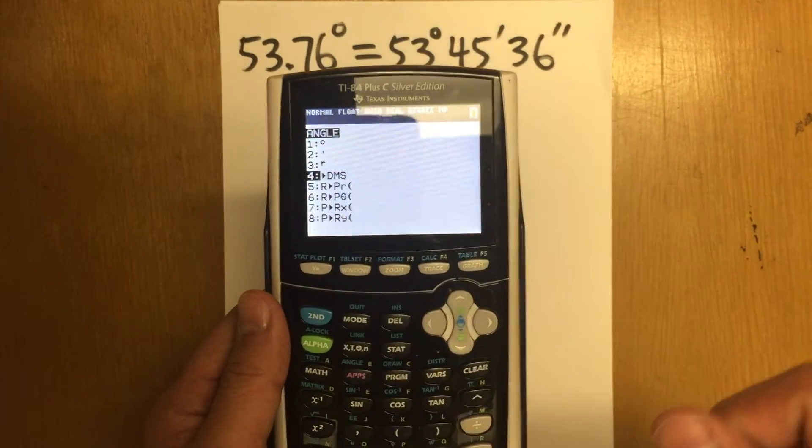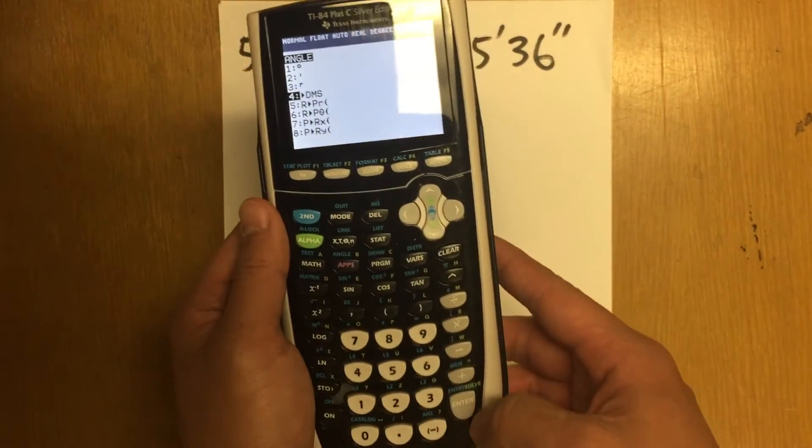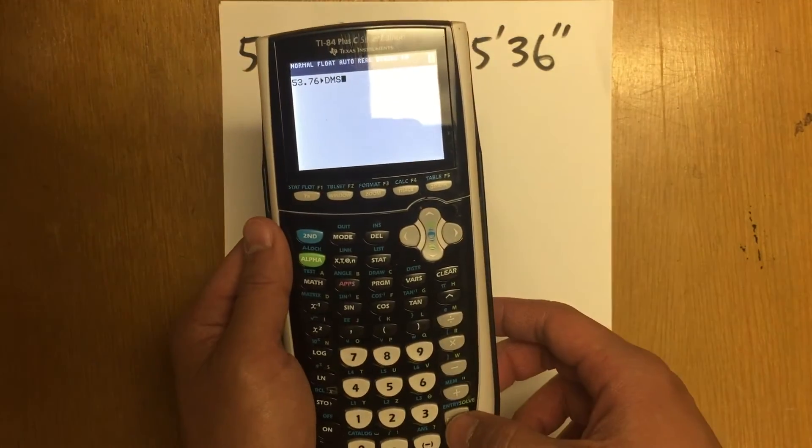That's the degree, minute, second. So let me just choose that by pressing enter. And then right here, I just have to enter it again.